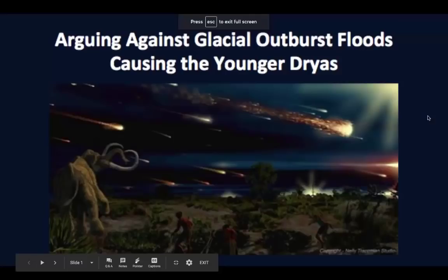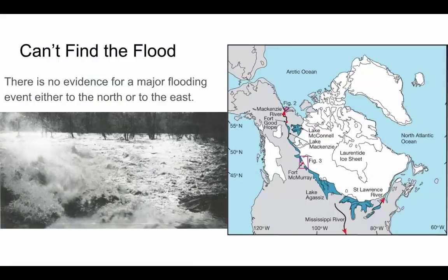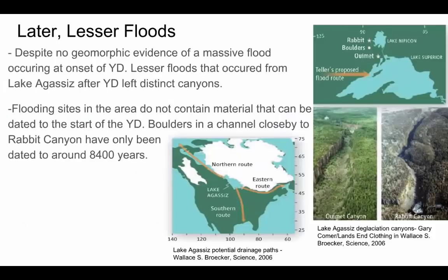Arguing against glacial outburst floods causing the Younger Dryas: water is a prime driver of erosion and an excellent transporter of various materials. A flooding event large enough to trigger the Younger Dryas would have been quite substantial, yet there is no geomorphic evidence of significant erosion or transport from hypothetical flooding. Many proponents of the flooding hypothesis point to Lake Agassiz draining around the time of the initiation of the Younger Dryas. However, there is geologic evidence that more recent flooding events from the very same lake led to the creation of substantial canyons — other channels near Rabbit Canyon, thought to have been carved by similar deglaciation events, have only been dated back to around 8,400 years. These floods are also thought to have been more minor than what would be needed to trigger the Younger Dryas, yet they still left geomorphic evidence.